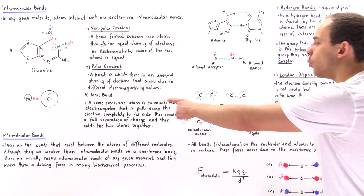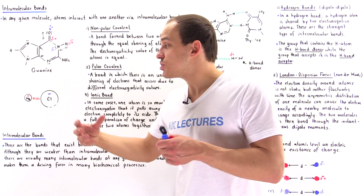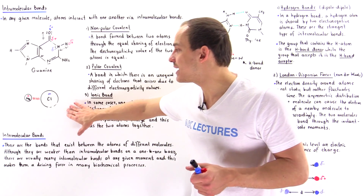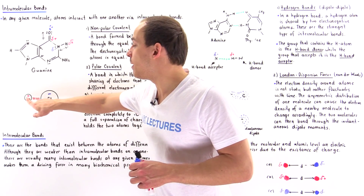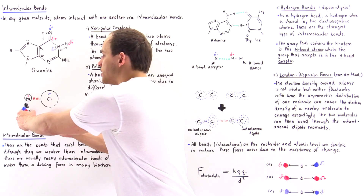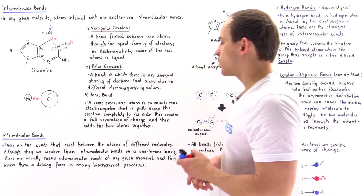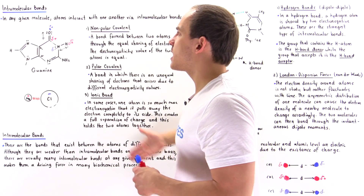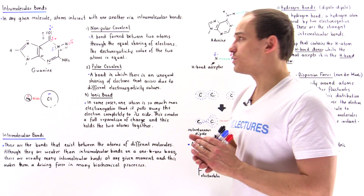In an ionic bond, one atom is so much more electronegative than the second atom that it pulls the electron density completely to one side. This develops a full positive charge on the sodium and a full negative charge on the chloride. So we have a separation of two full charges, and that will create a force we call the ionic force or the ionic bond — one of the three types of intramolecular bonds that hold the atoms in a given molecule together.